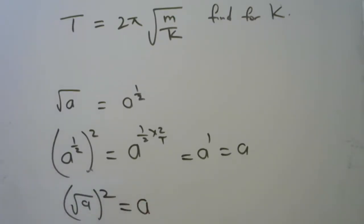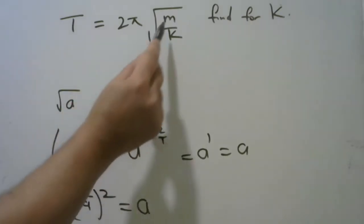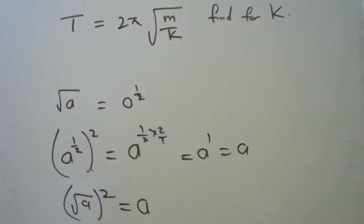All right? Now, similarly, the square root of m upon k all squared is equal to m upon k. So let's look at that.